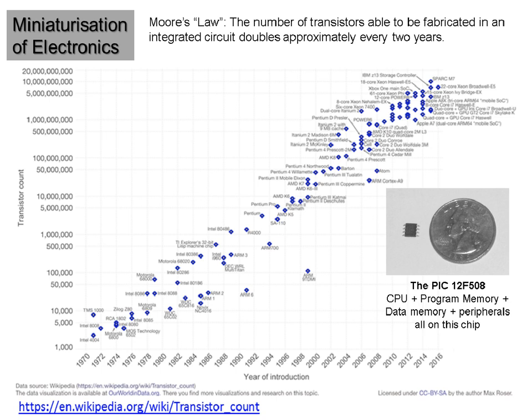To the right, we see a tiny PIC microcontroller — more computationally powerful than the computer that landed the first man on the moon, and yet so very small. It has the CPU, the memory, data memory, and loads of peripherals. So electronics has collapsed in size, become loads cheaper, and become loads more sophisticated and powerful.